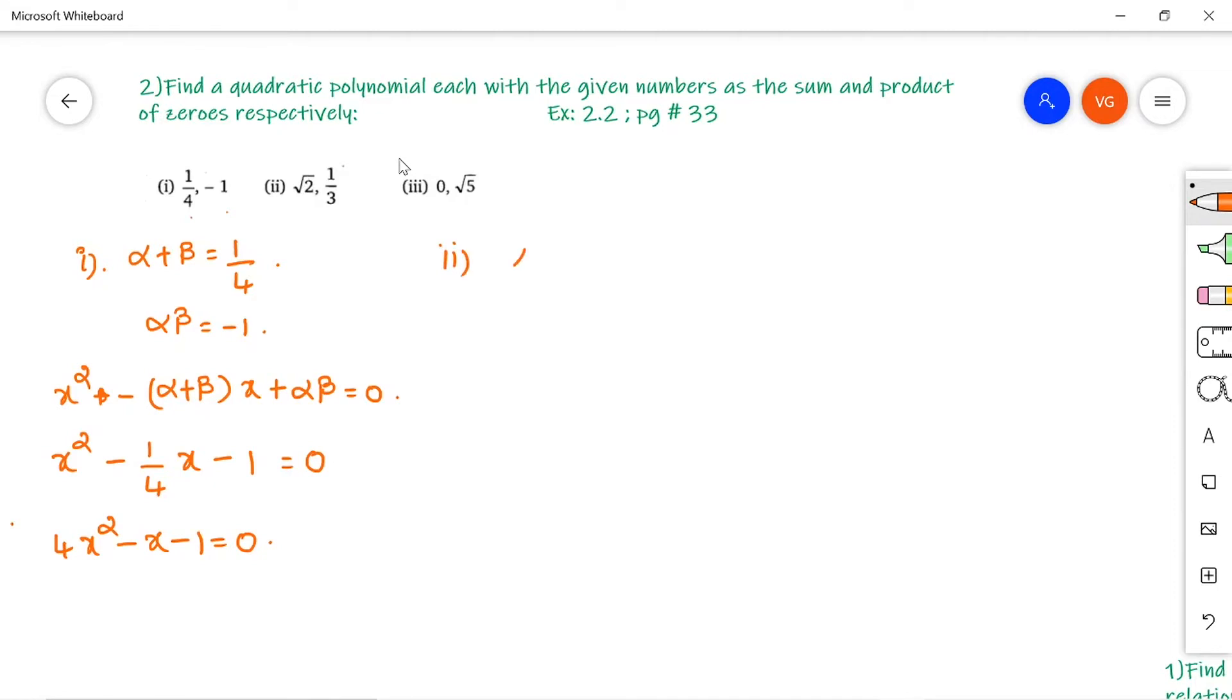The second problem gives sum of zeros as √2 and product of zeros as 1/3.